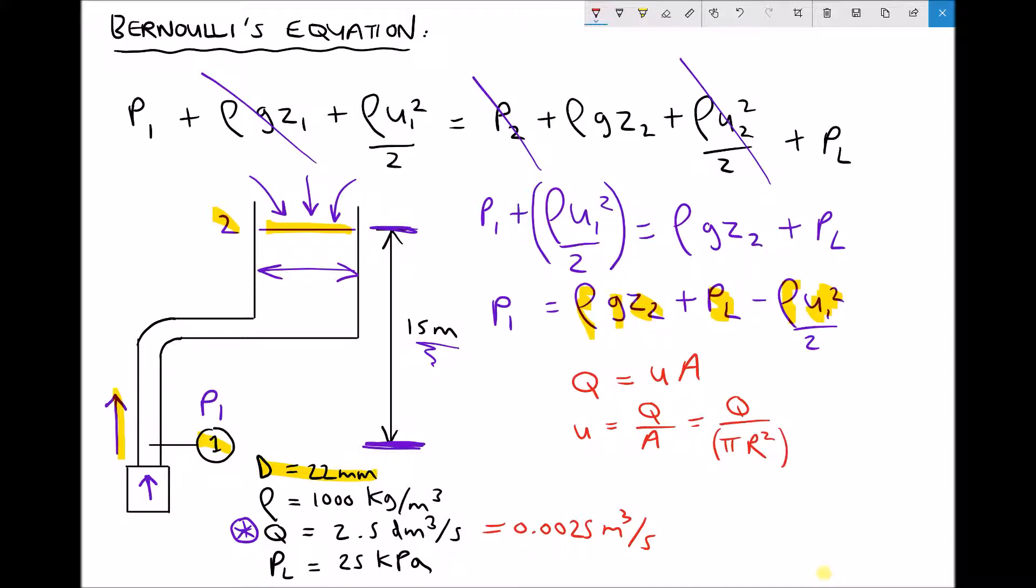Well, if the diameter is 22 millimetres, then the radius is 11 millimetres, and dividing by 1000 gives us 0.011 metres. Again, it's important to work in SI units.